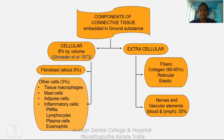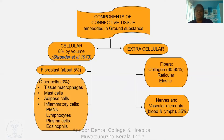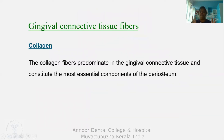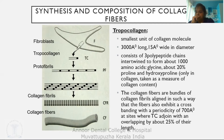Now let's move into detail about the extracellular components, starting with collagen. Collagen fibers predominate in the gingival connective tissue and constitute the most essential components of the periosteum. The smallest unit of the collagen molecule is tropocollagen, which consists of three polypeptide chains intertwined to form about 1,000 amino acids — glycine 20%, proline, hydroxyproline (measured as an indicator of collagen content).